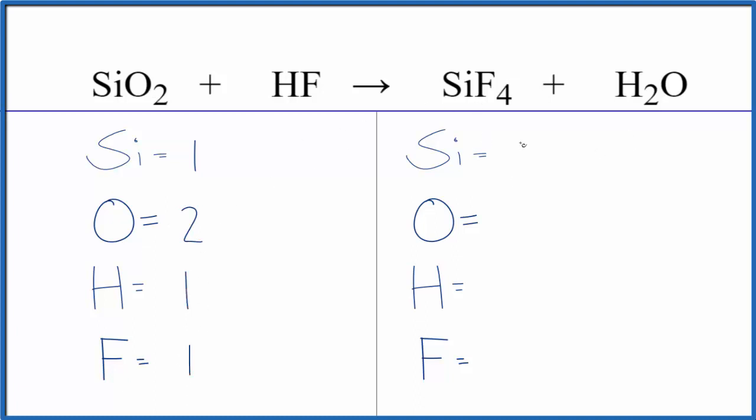On the product side we have one of the silicon atoms, we have oxygens, just the one, hydrogens two, fluorines four.